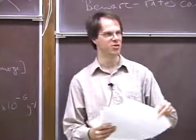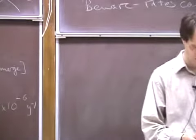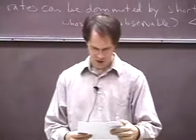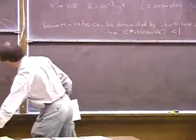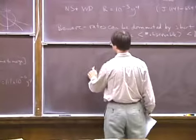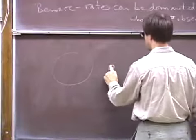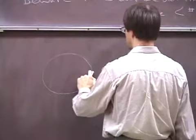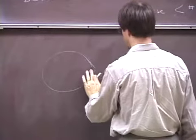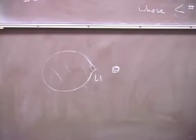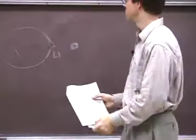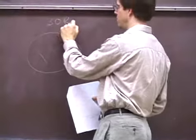Now, why have I bothered to give you all these plots of radius as a function of time? Let's look at the 1.5 solar mass star. Suppose that this star was born in a binary system where the radius of the Roche lobe was, let's say, 30 solar radii.